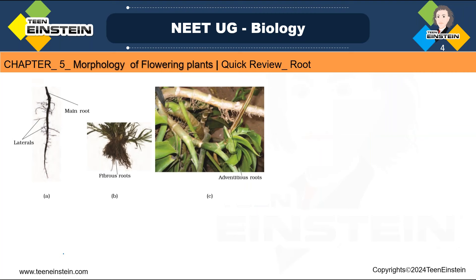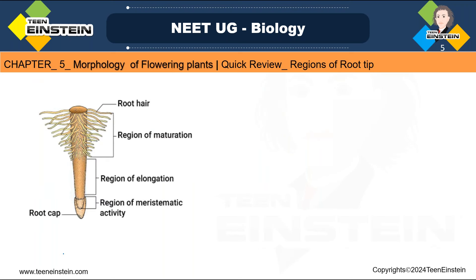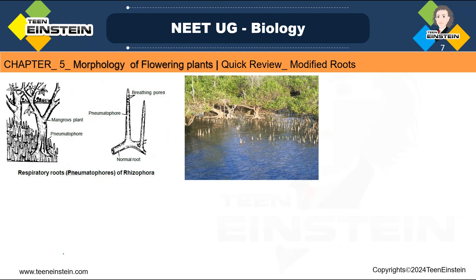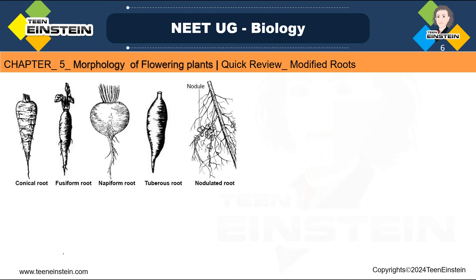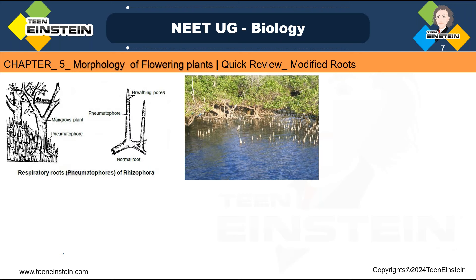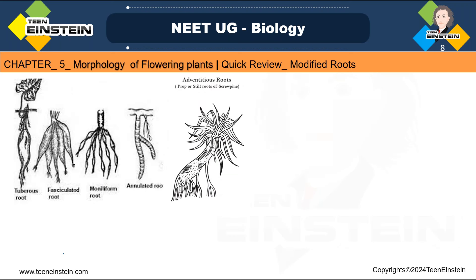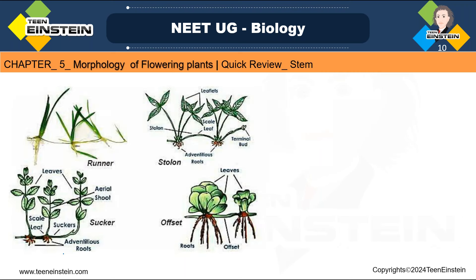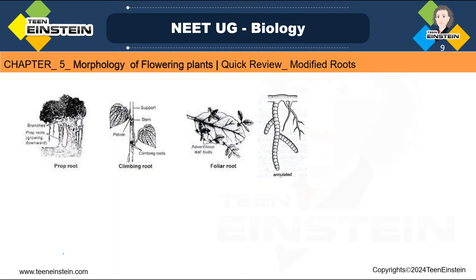We have already covered the root portion. In that we learned about tap root, fibrous root, and adventitious root and their modifications, and we learned the structure of the root tip. Respiratory roots or pneumatophores are very important. For each type — tap root modifications with examples — you need to learn different types. Climbing roots, foliar roots, and annihilated ones — all these you need to learn with one example each.